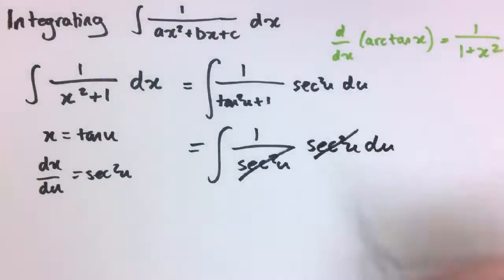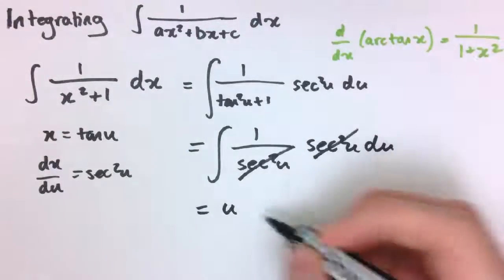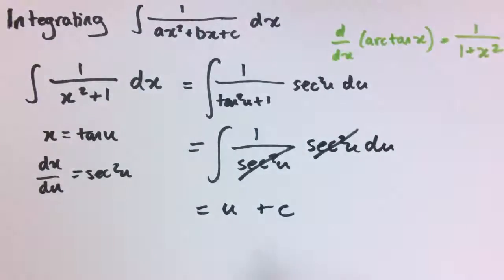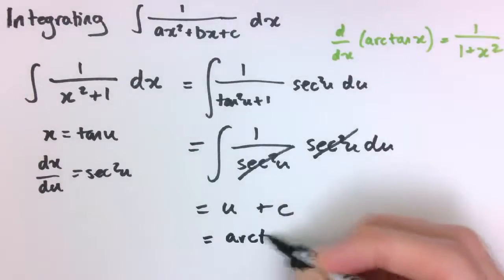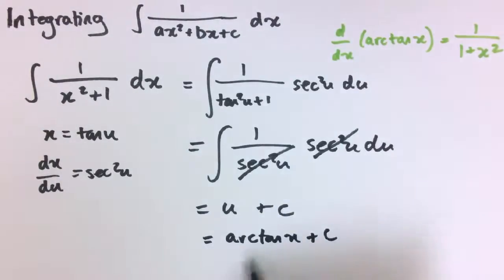So they cancel out, you've just got the integral of 1 du then, which is u plus our arbitrary constant, but x is tan u, so u is arctan x plus c.